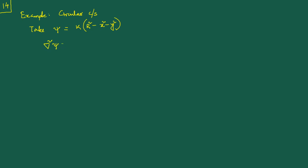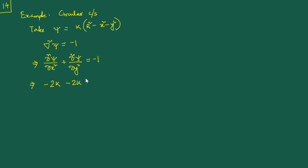We use the governing equation ∇²ψ = -1 to find k. Computing ∂²ψ/∂x² + ∂²ψ/∂y² gives -2k - 2k = -4k = -1, so k = 1/4. Therefore ψ = (1/4)(r² - x² - y²).